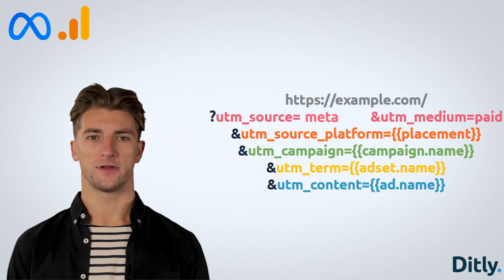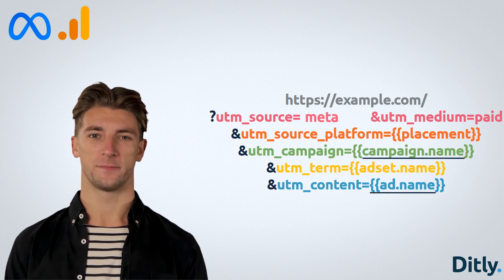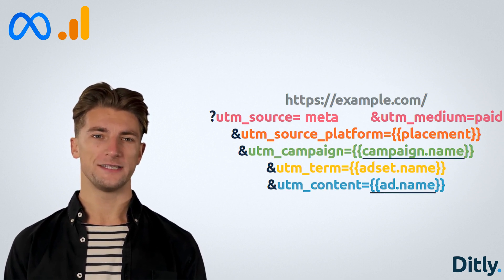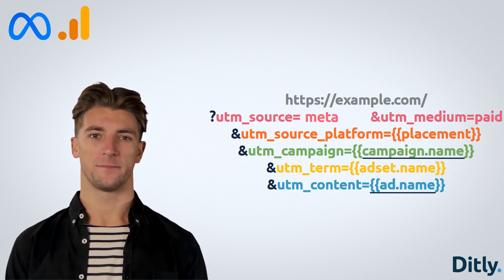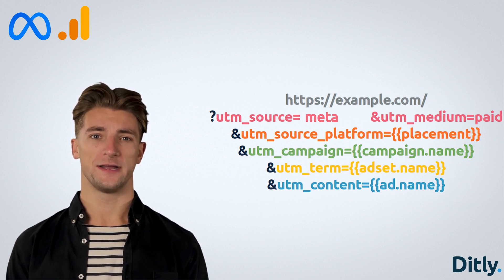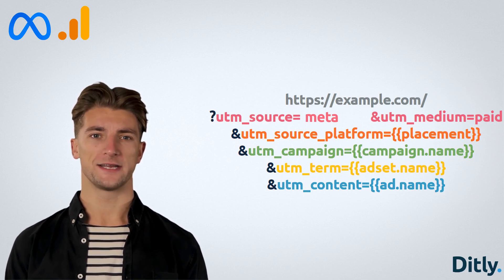This UTM string uses dynamic tags for everything after the medium. Dynamic tags pull data from the Facebook ad platform, such as campaign and ad names. Use these dynamic tags with caution, since Facebook will use the values first set when the campaign or ad was first created. For instance, if you copy an ad and publish it, then change the name after, Facebook will always use the old ad name as the content for the UTM value.